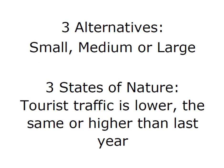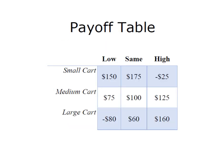I have three alternatives: I can have a small, medium, or large cart. And I have three states of nature — tourist traffic is either going to be lower, the same, or higher than last year. I've created my payoff table with my three states of nature and my three decision alternatives, and I have a payoff associated with every decision alternative under every possible state of nature.